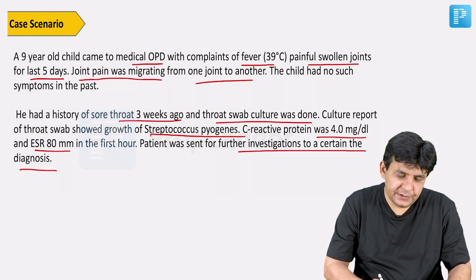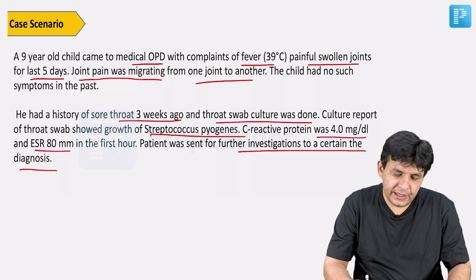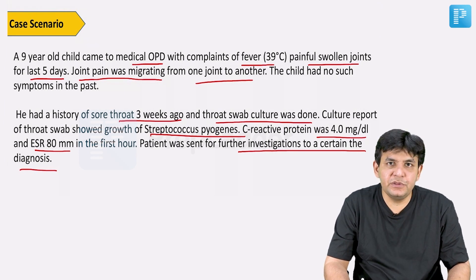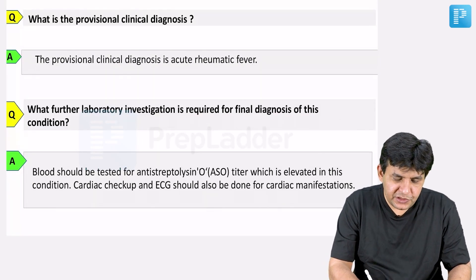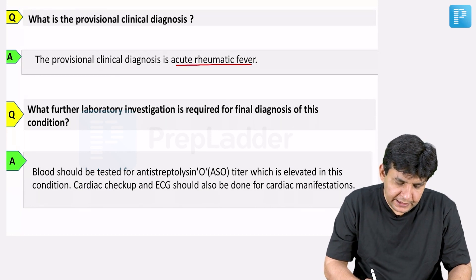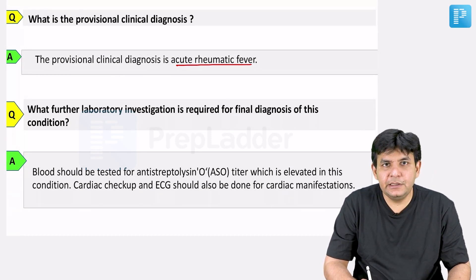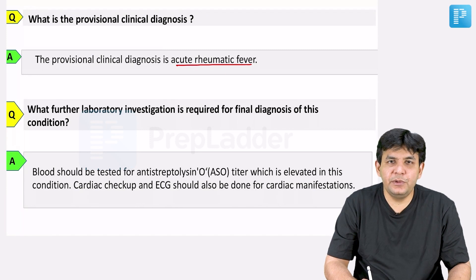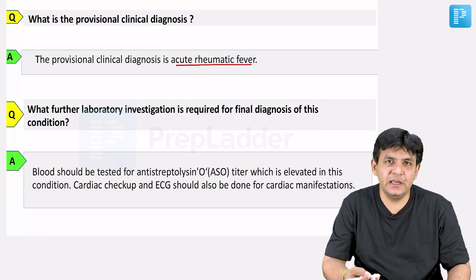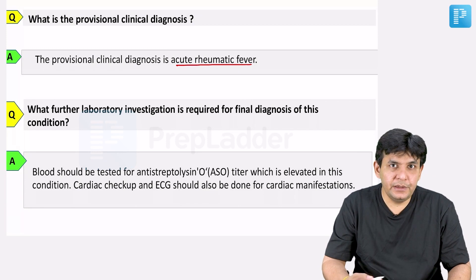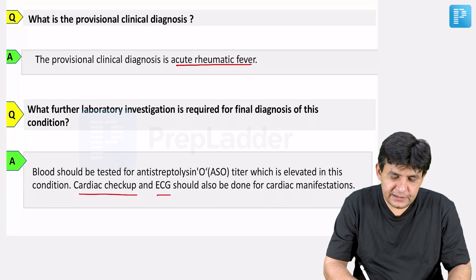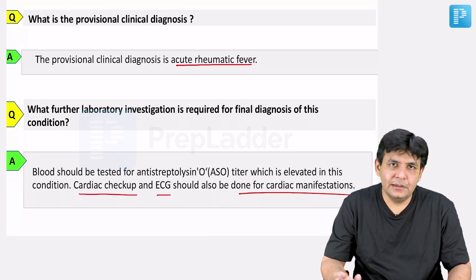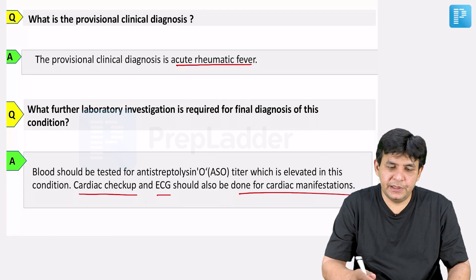There is a bacterial infection, migrating joint pain along with fever and painful swollen joints. This is classically seen in acute rheumatic fever. So the provisional clinical diagnosis here is acute rheumatic fever. Regarding Group A Streptococcus, we go for certain titers termed as ASO — antistreptolysin O. Titers more than 200 Todd units indicate this, and you definitely have to go for a cardiac checkup and ECG to evaluate other cardiac manifestations that can occur.